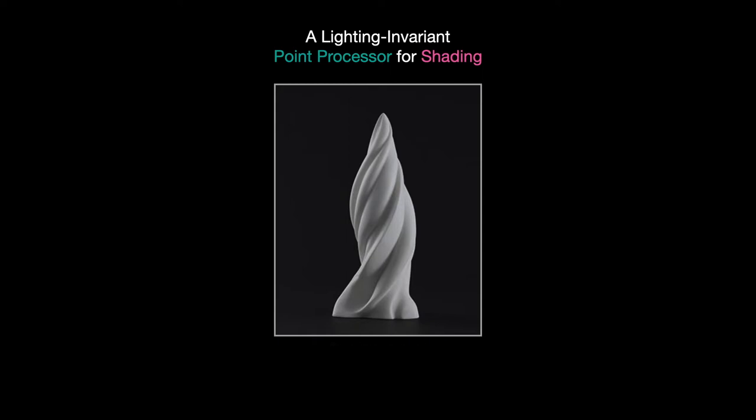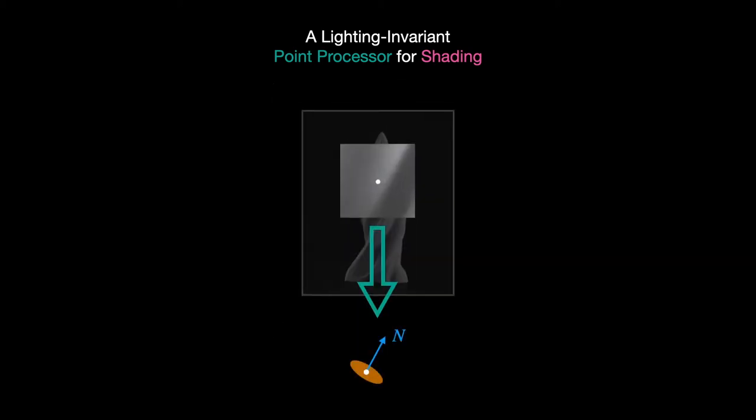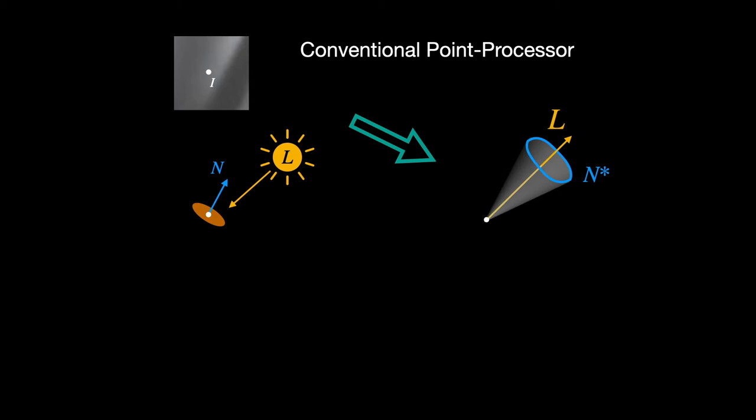For the past 50 years, we have been attacking this so-called shape-from-shading task using constraints on the surface normal at each pixel. For example, under directional lighting, if I give you the intensity at a point on a diffused surface and I give you the distant light source direction, then by Lambert's law, the normal is constrained to a cone. We can interpret this as a point processor that measures intensity and outputs a set of consistent shapes in the form of a cone of surface normals.